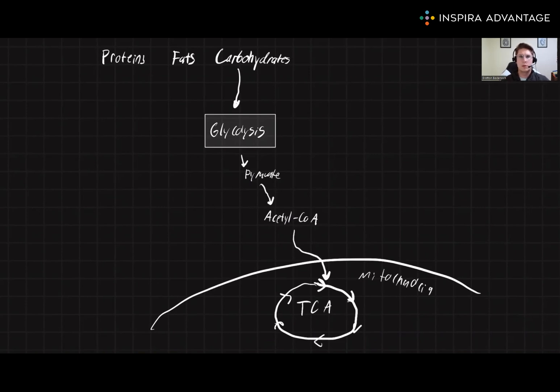The TCA cycle is going to produce some very important compounds. It's going to make NADH, FADH2, as well as some ATP. NADH and FADH2 are going to move to the electron transport chain to be turned into even more ATP through oxidative phosphorylation. So again, let's add this to our diagram.